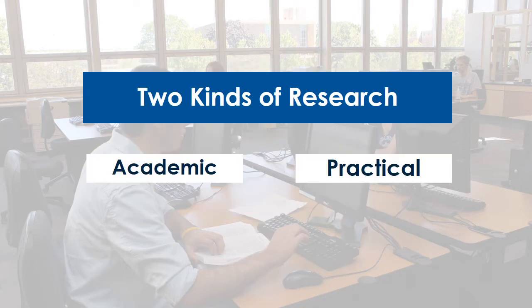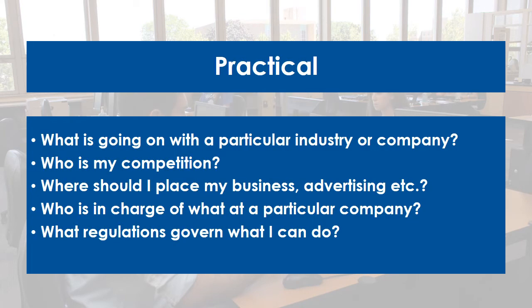There are basically two kinds of research business students do: academic research and practical research. What library resources you use depend on what kind of research you're doing. Practical business research informs everyday decisions that business leaders make. These questions might include what's going on in a particular industry, a company, or with a particular clientele — for example, who are the competitors of a company.